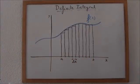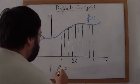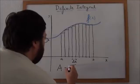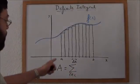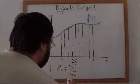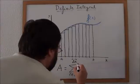So the sum of the area of all rectangles will give us the total area. The total area would be the sum of all rectangles from a to b.